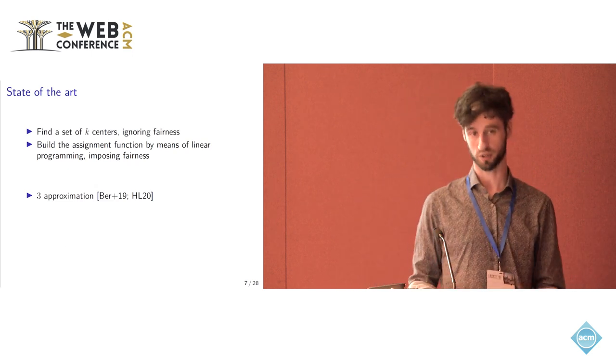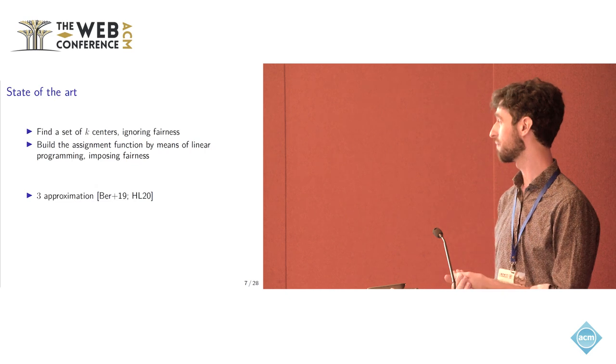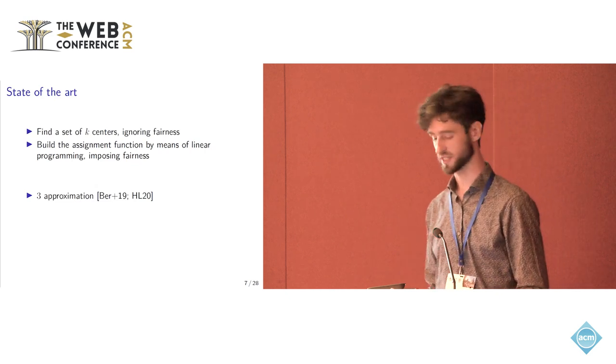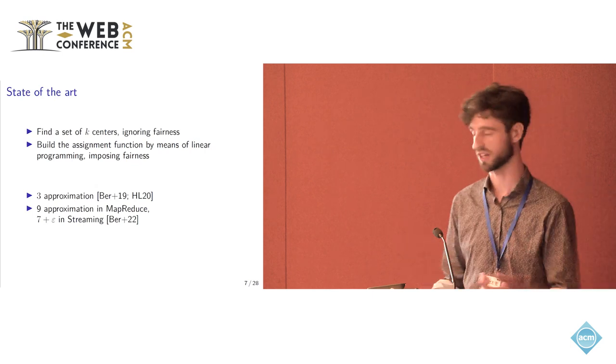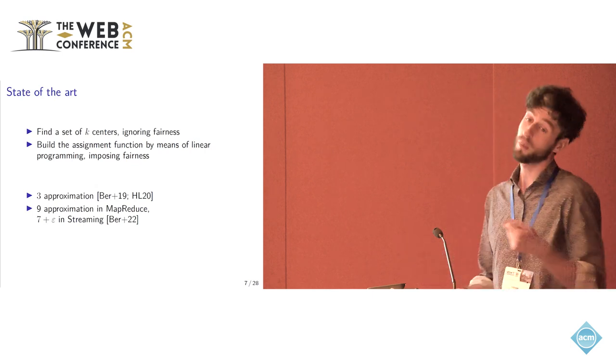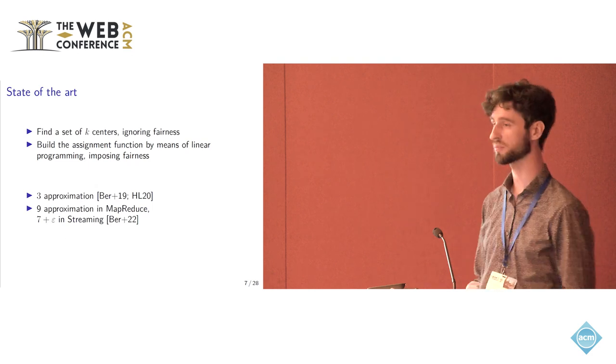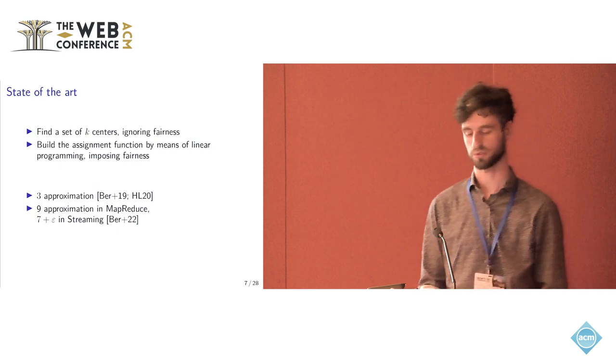This gives you, in most cases, three approximations because the problem is, of course, NP-hard. So this gives you a three approximation in the sequential setting, and there are also MapReduce and Streaming algorithms when you have large amounts of data. However, you lose a little bit of the quality because in MapReduce you get a nine approximation and in Streaming you get a seven plus something approximation.